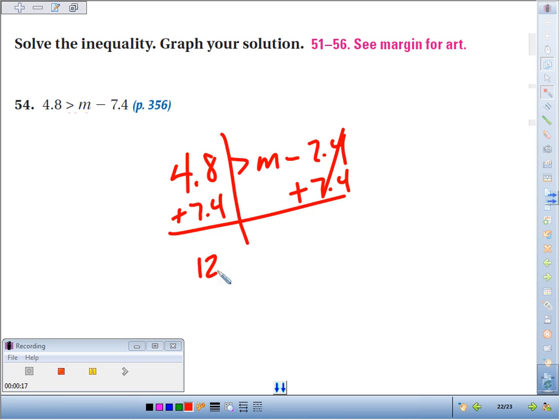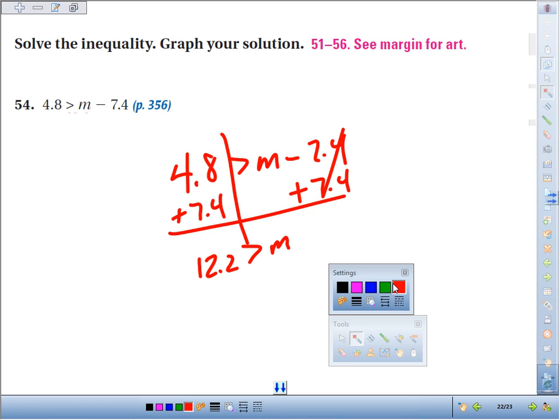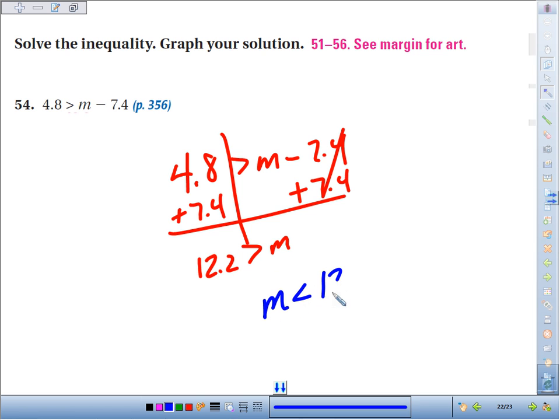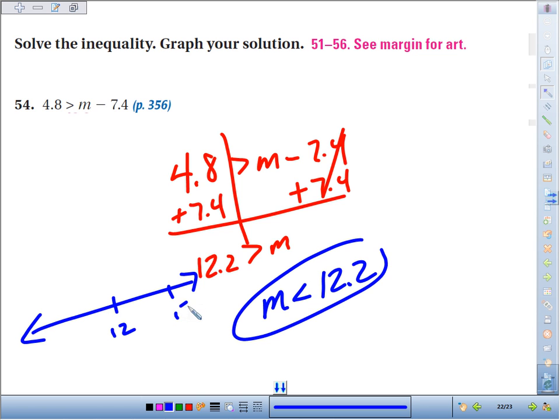So 12.2 is bigger than m. Usually when we solve, we put the variable on the left, so if 12.2 is bigger than m, then m is smaller than or less than 12.2. Graphically, I'll just give a quick rough sketch.